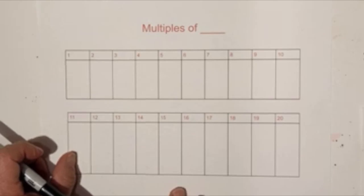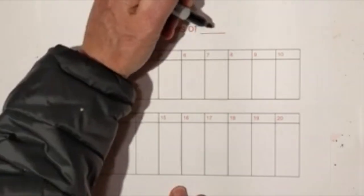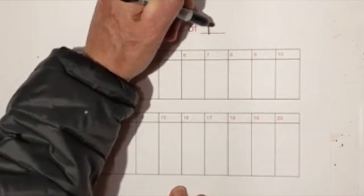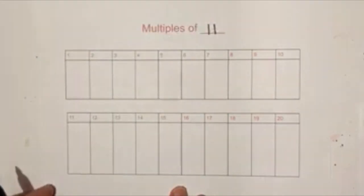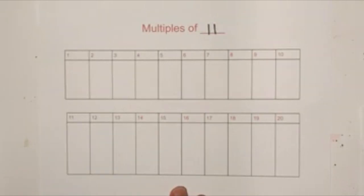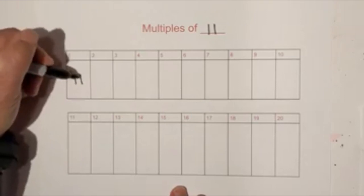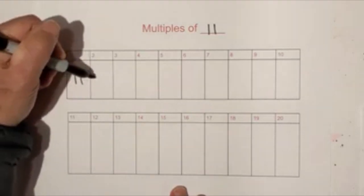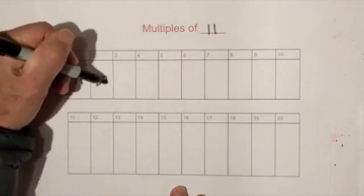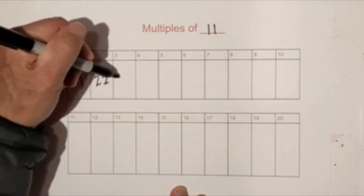Hello, welcome to Moving Math and Science. In this video we're going to go over multiples of 11, so let's get started. One times 11 is obviously 11, then we have 22, and you can see the pattern.